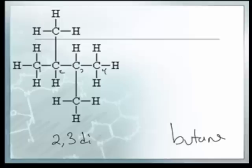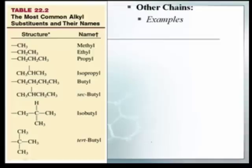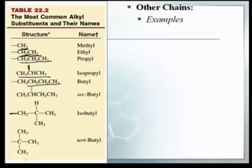...dimethylbutane — 'di' because there are two methyl groups. If there were three it would be trimethyl. You can also have ethyl groups and such. Here are some example branch groups: a methyl group, an ethyl branch, a propyl branch, an isopropyl branch — notice the bond comes off the middle carbon — and a butyl group. There's also sec-butyl, when it bonds at the second carbon, iso-butyl, and tert-butyl. You don't really need to know all of these for the AP test.